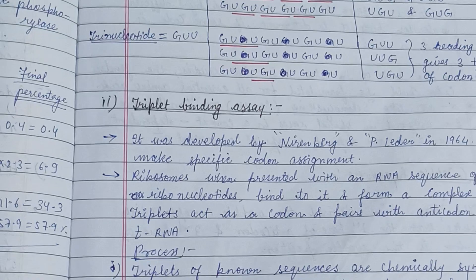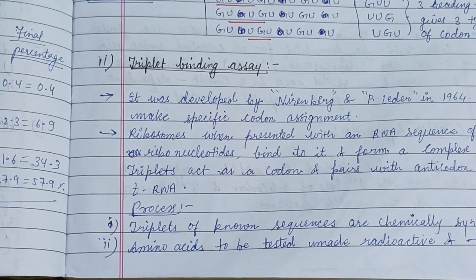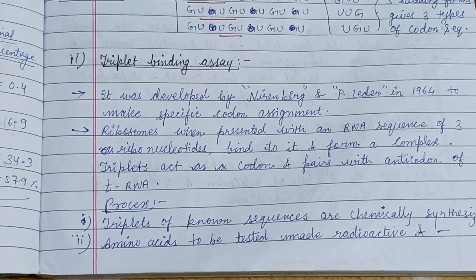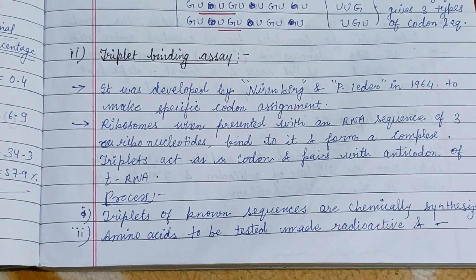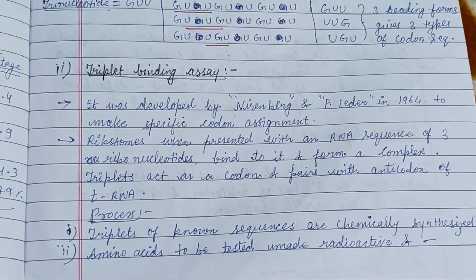The triplet binding assay was developed by Nirenberg and Leder in 1964 to make specific codon assignments.